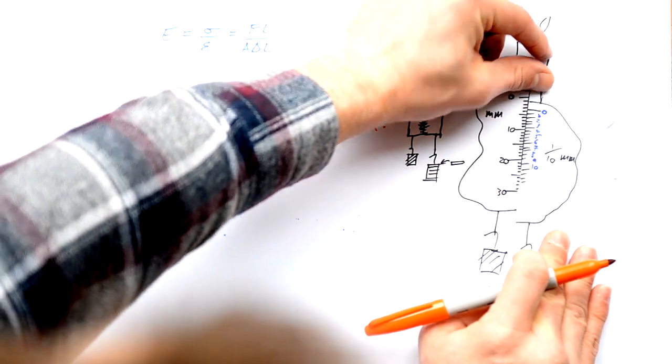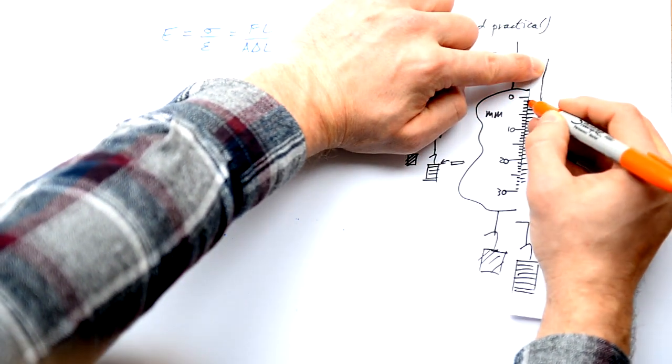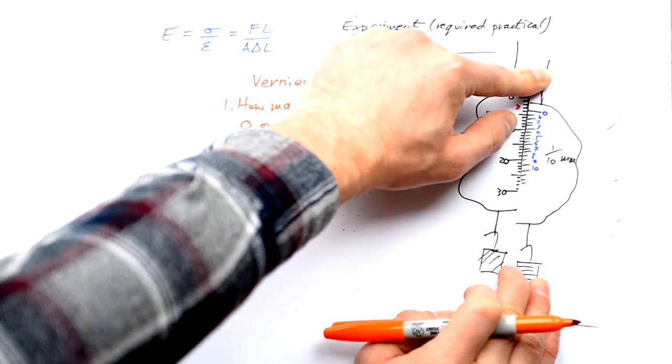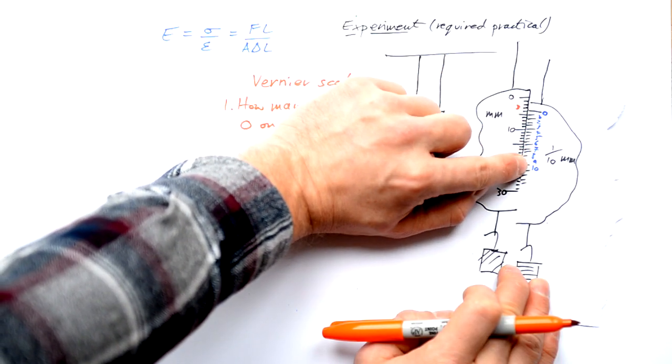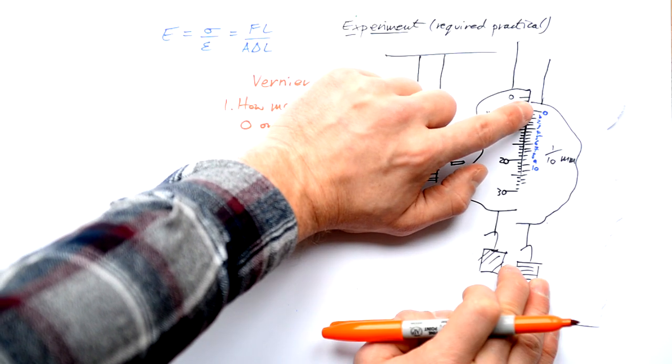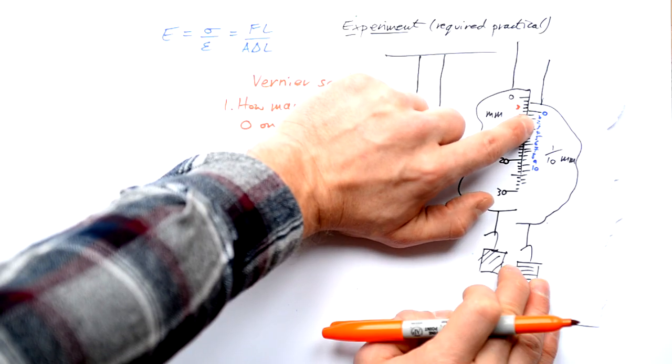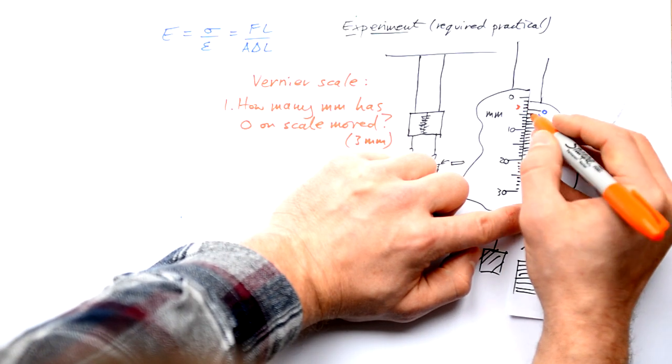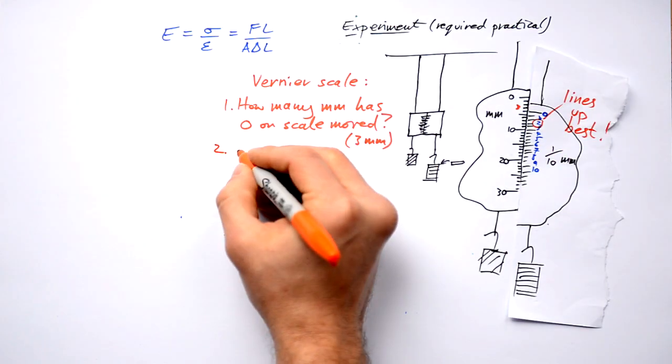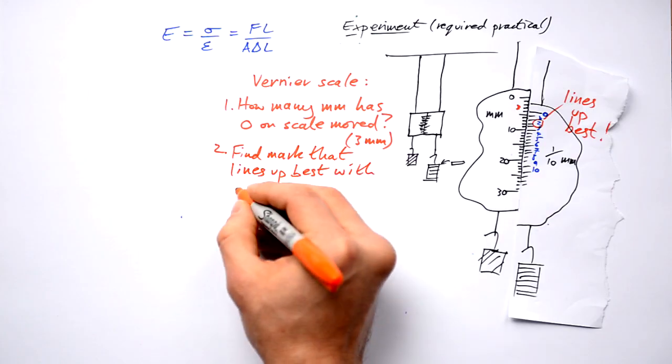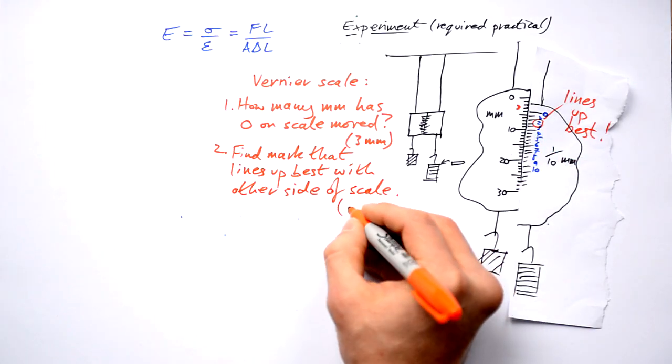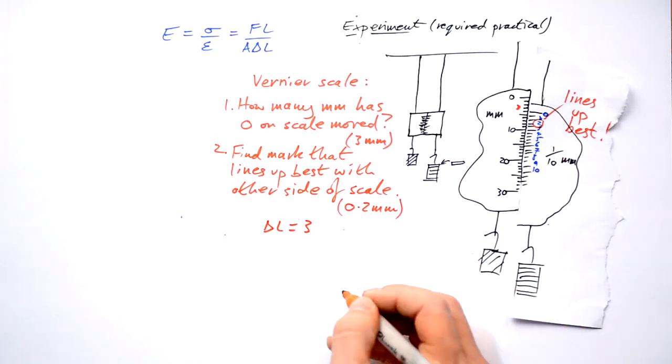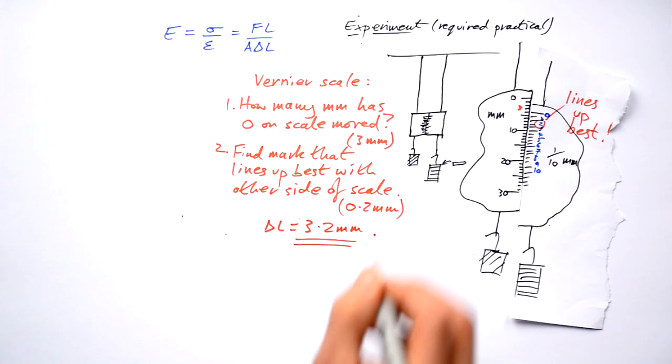So let's say that my vernier scale has moved to here. I can see that my zero has moved one, two, three. It's gone past three millimeters there. But the vernier scales are clever because this half of the scale is different to the scale here. What we need to do then is have a look at all of our lines on here. There should be 10 lines. I've drawn way too many on here, but get the idea. There should be 10 lines on here. What do I do? I find out which one of these lines matches up with one of these lines the best. So does the one line up here? Well, no, it doesn't. I'm going to say that it's my number two that lines up best. So step two is find mark that lines up best with the other side of the scale. In this case, it's two. So that actually gives me 0.2 millimeters. That means that my extension is now three millimeters plus that two tenths of a millimeter.